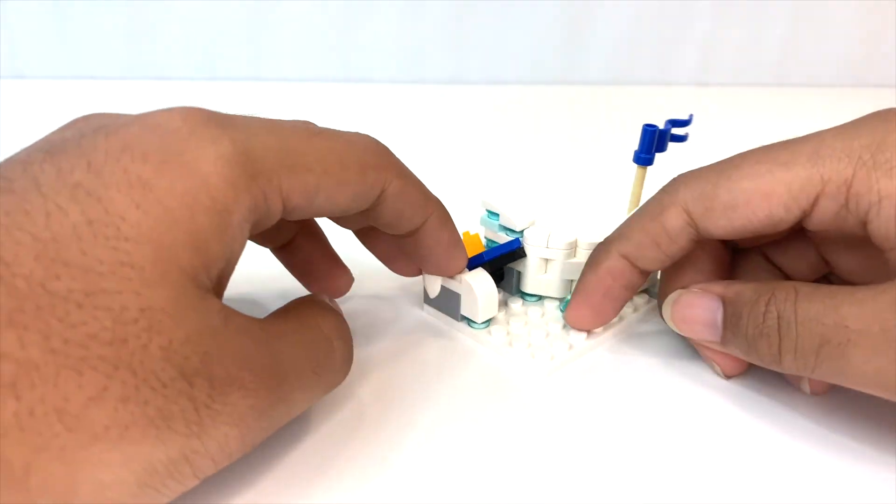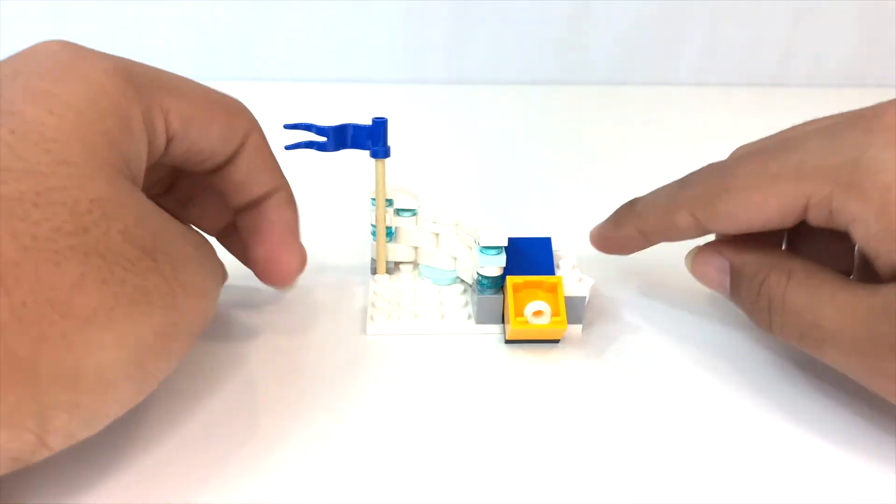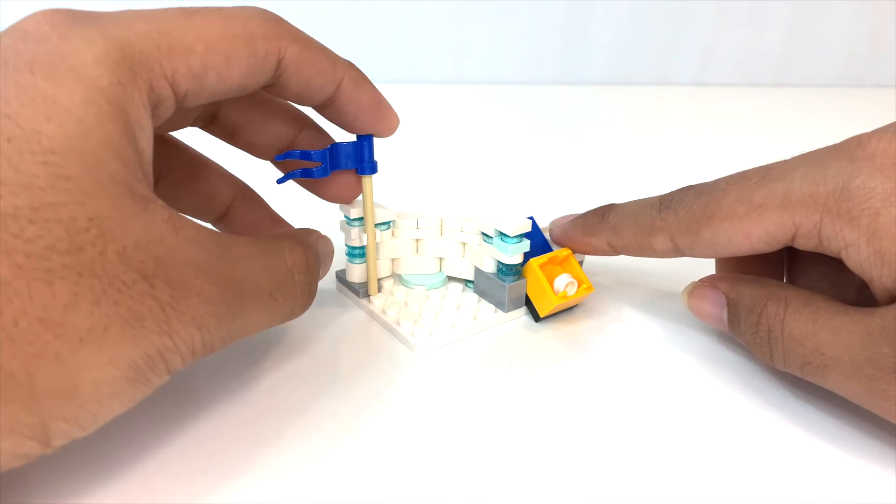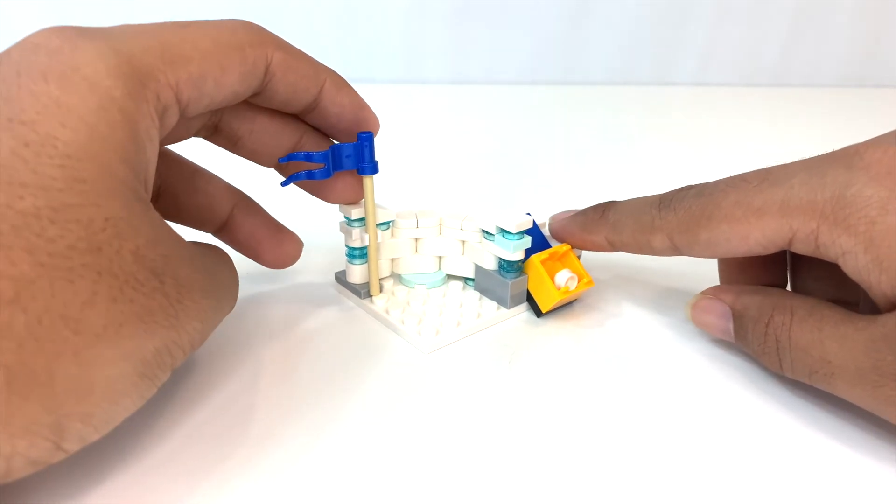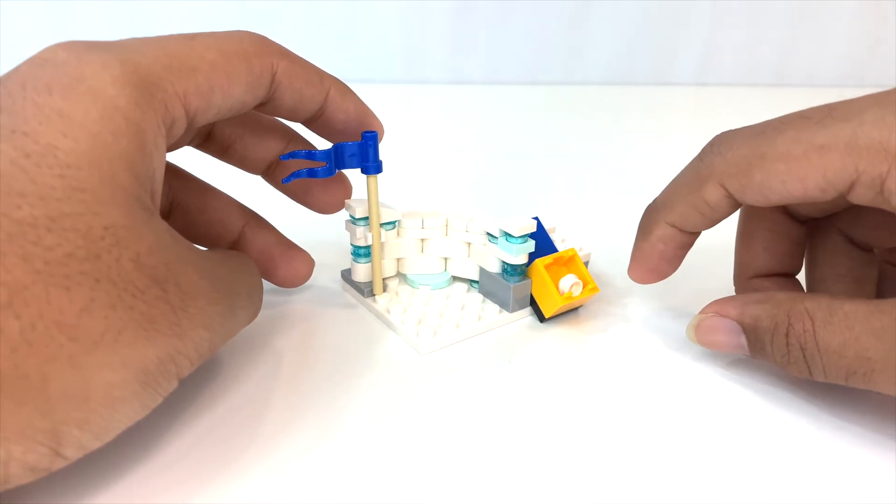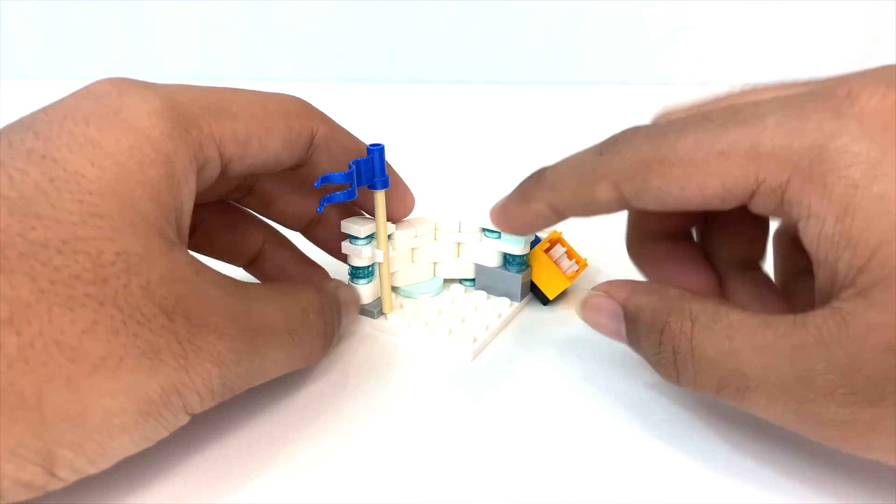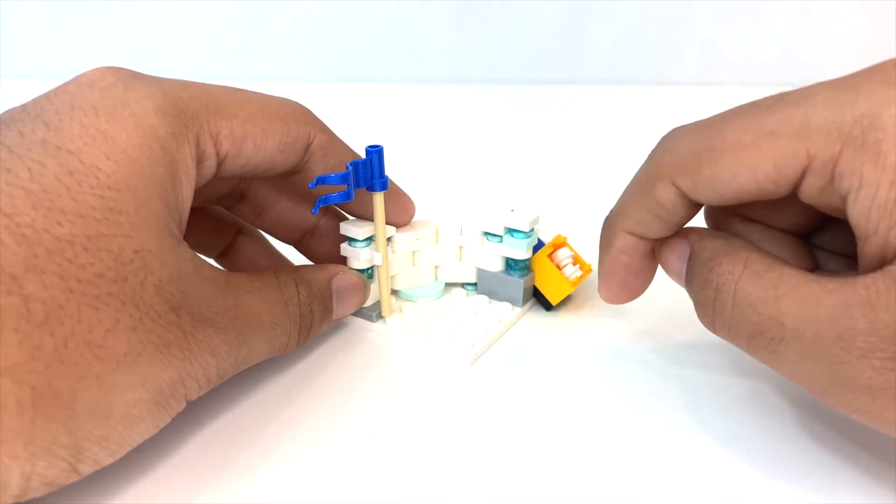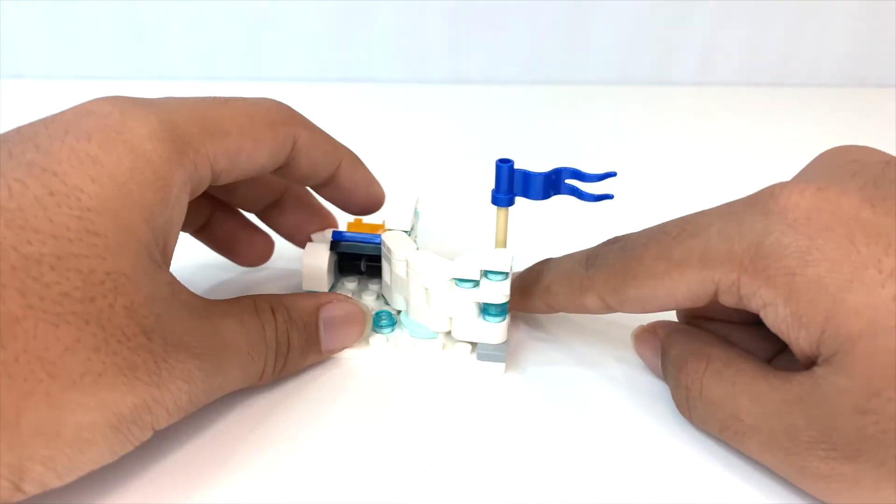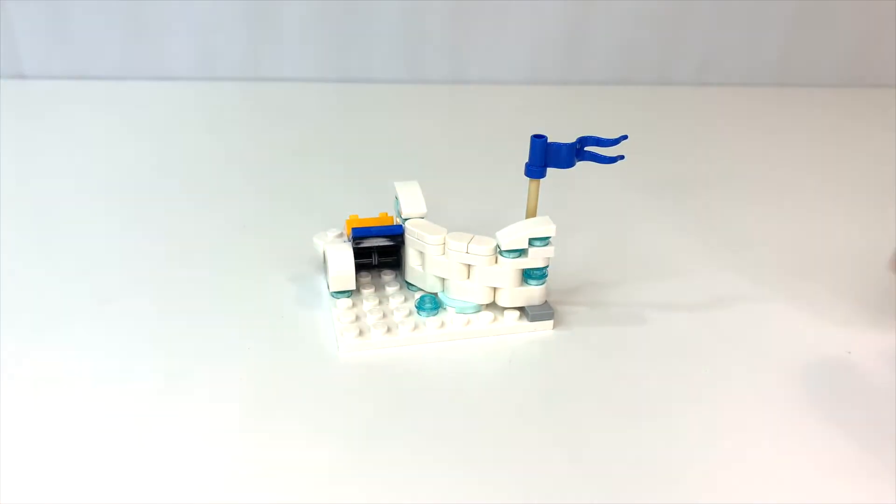Again, not much going on around the back. You've got a blue flag. That's nice because you have the red flag on the other side. Maybe they're doing capture the flag in a snowball fight. But there's actually a lot of room back here. You can probably fit two to three minifigures. So yeah, I think this is definitely my favorite build of the set.